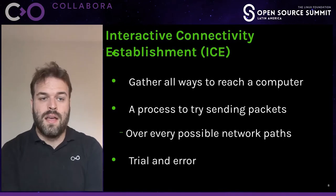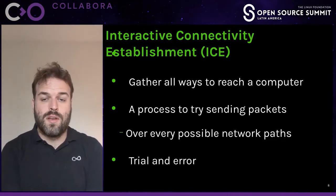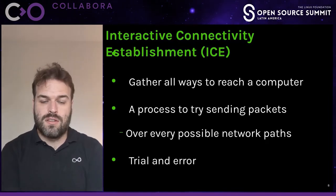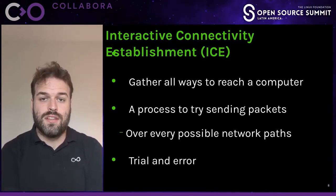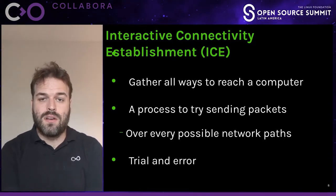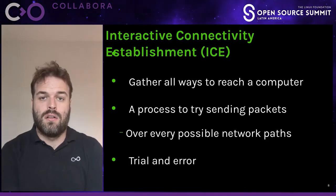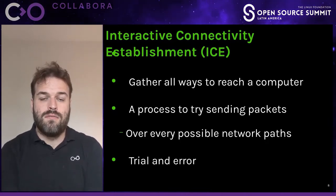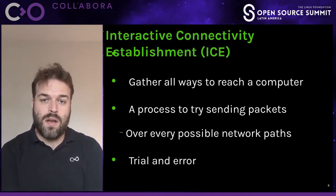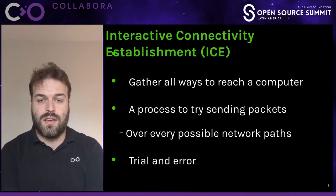So what is ICE? ICE is a way to create a peer-to-peer connection between two computers. The way it works is actually not very complicated. Each peer, each agent, finds all the possible ways it can be reached — all the possible addresses. For example, it can be the address on its local interface. If you have something like a phone, it could have a Wi-Fi and an LTE interface, so it actually has two addresses.